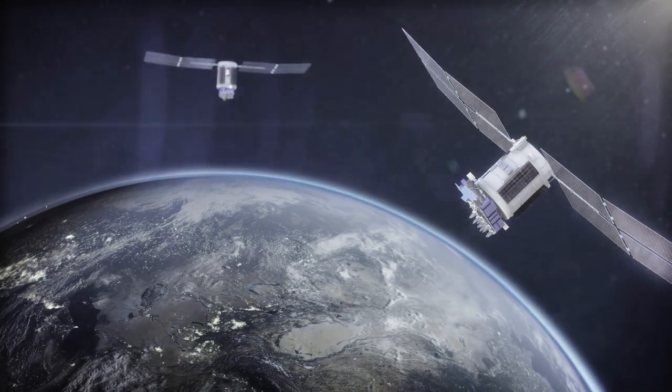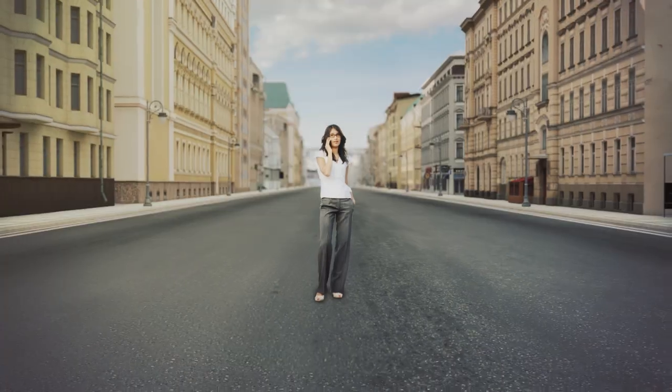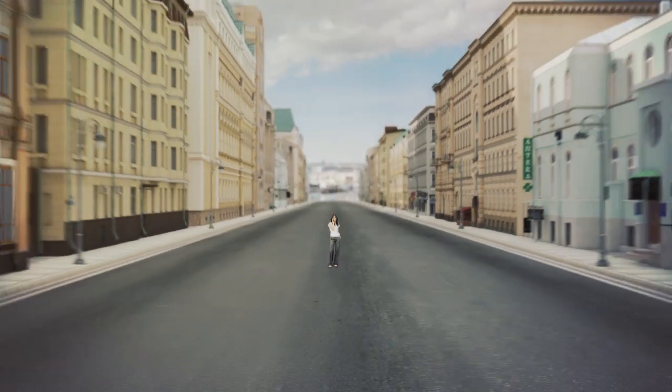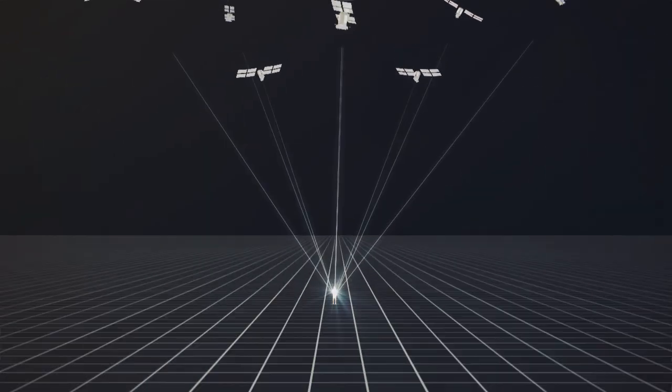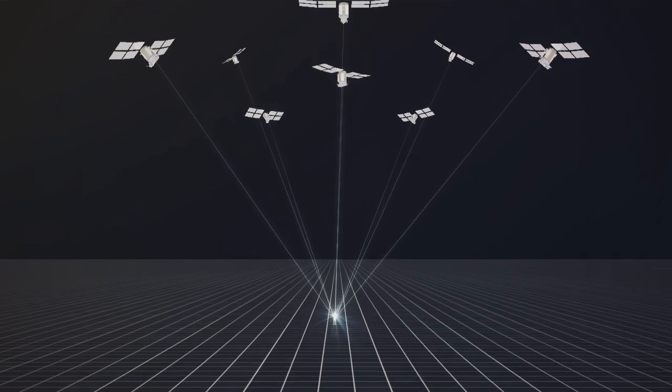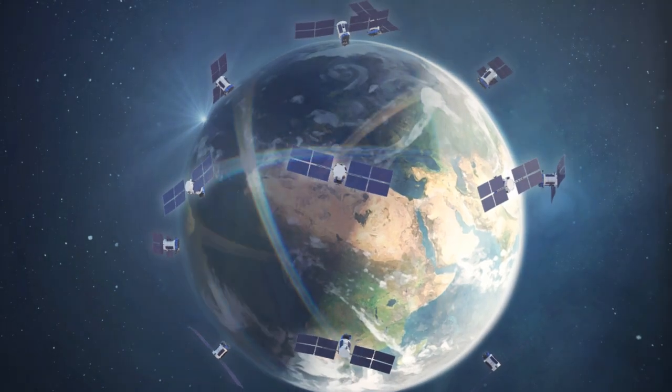An example is the global navigation system GLONASS, the exact characteristics of which are directly dependent on the accuracy of monitoring the laser radiation parameters in locating spacecraft.